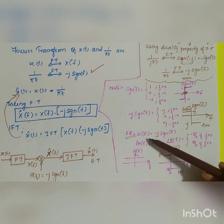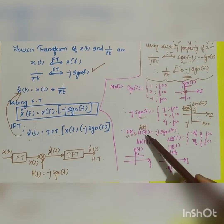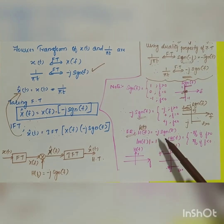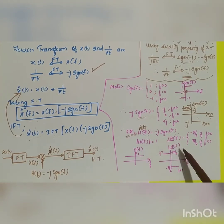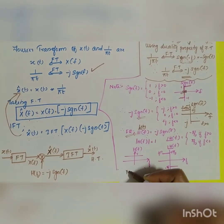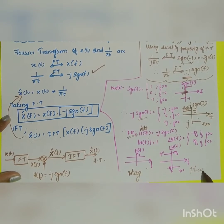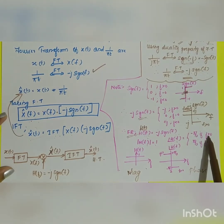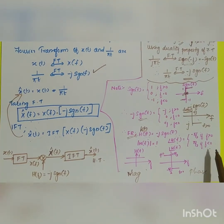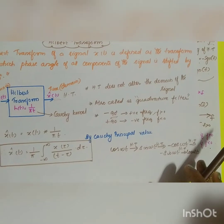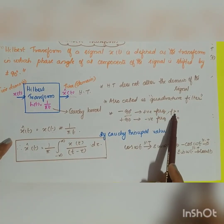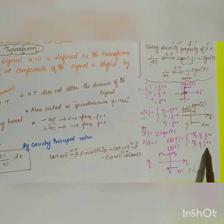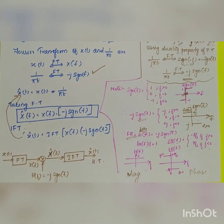In the frequency response H(f) — the Fourier transform of the impulse response h(t) — equal to −j·sgn(f), we can represent H(f) in terms of magnitude and phase. The magnitude of H(f) equals 1, and the phase of H(f) equals −90 degrees for f > 0 and +90 degrees for f < 0. This confirms the earlier statement: minus 90 degrees for positive frequencies and plus 90 degrees for negative frequencies. In the next video, we will see the properties of the Hilbert transform.